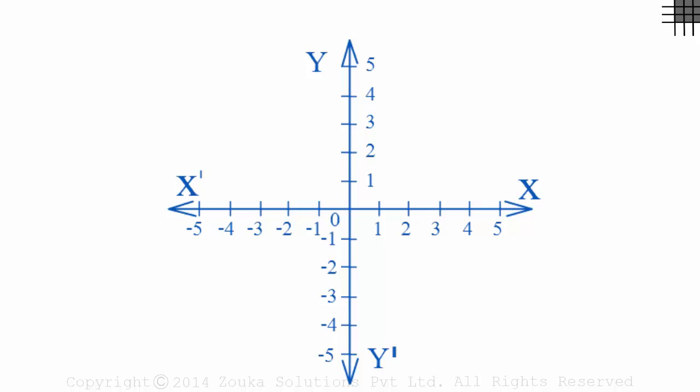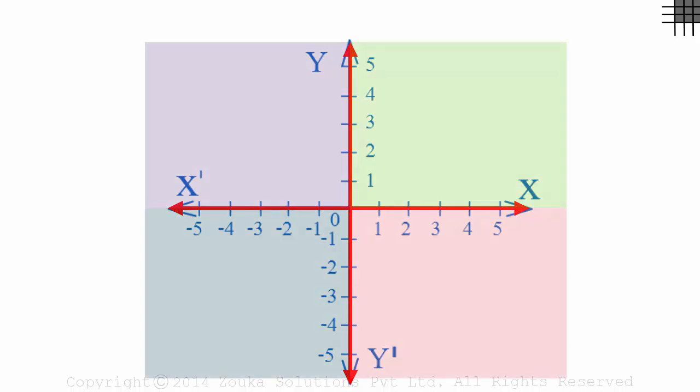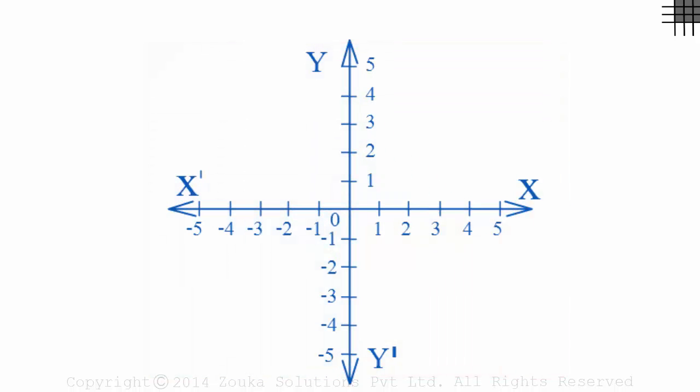This is a coordinate plane, two axis and four quadrants. How do we find the distance between any two points? Say we have two points A and B. How do we find this distance?